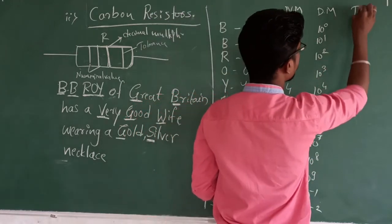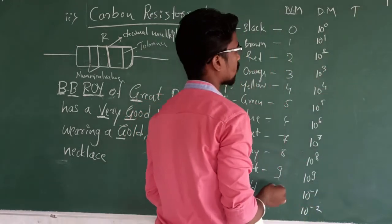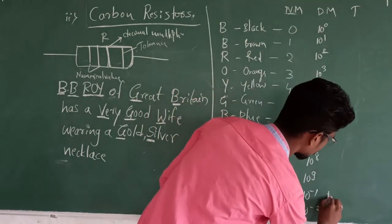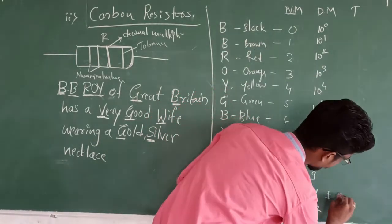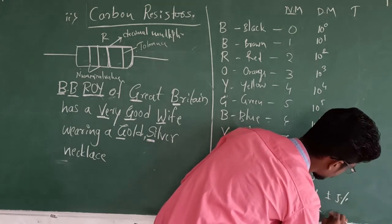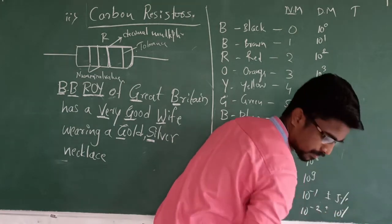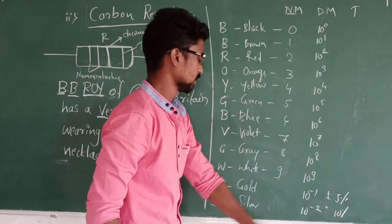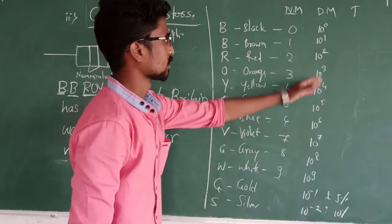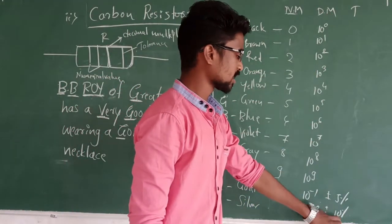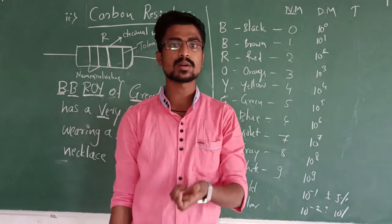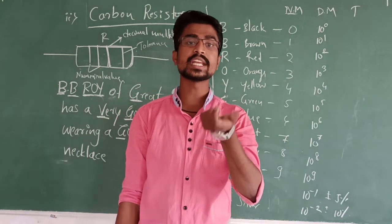For tolerance: Gold gives 5% and Silver gives 10%. Tolerance value means the possible variation about the indicated values.